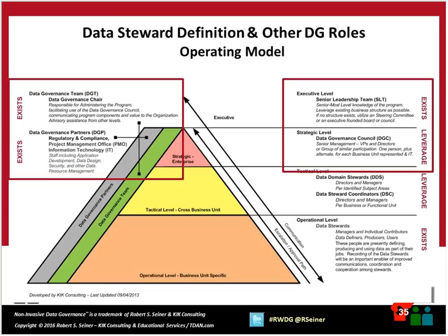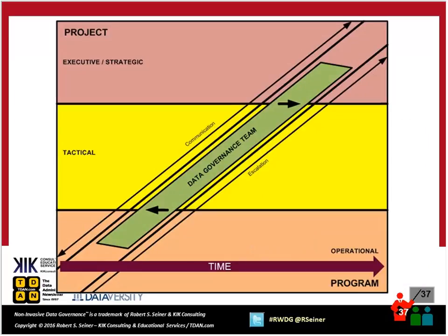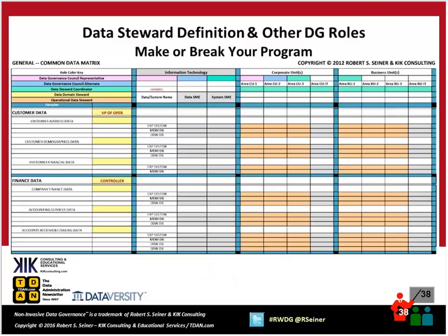One more picture of the operating model transformed into a cube, adding the element of time. In the early phases of the program during the project phase, the emphasis is on the executive and strategic layer, but the de-emphasis is on the operational level. When we get into the program part of implementing data governance, it's exactly the opposite — the operational side is where the focus is, everybody's the data steward, and we only utilize the executive or strategic piece to resolve issues that have been escalated. The common data matrix is something very important for you to catalog and inventory the data important to your organization and to help identify who the 'everybodys' are in your organization that are stewards of data.